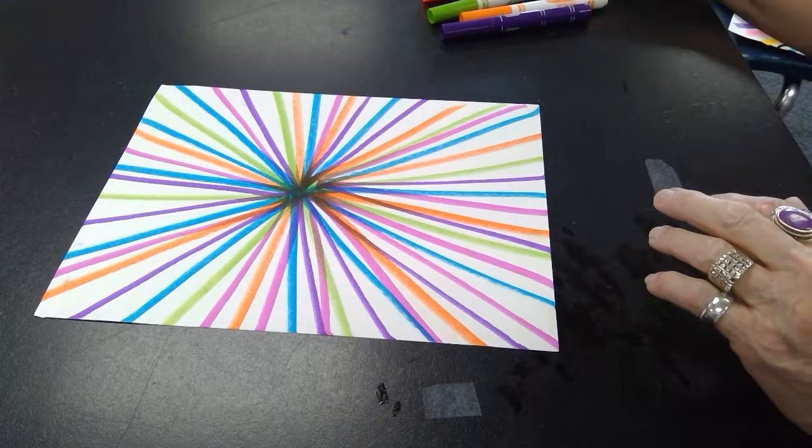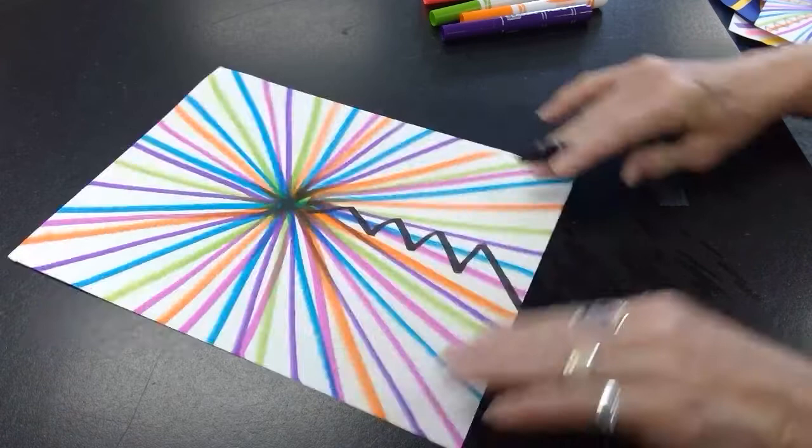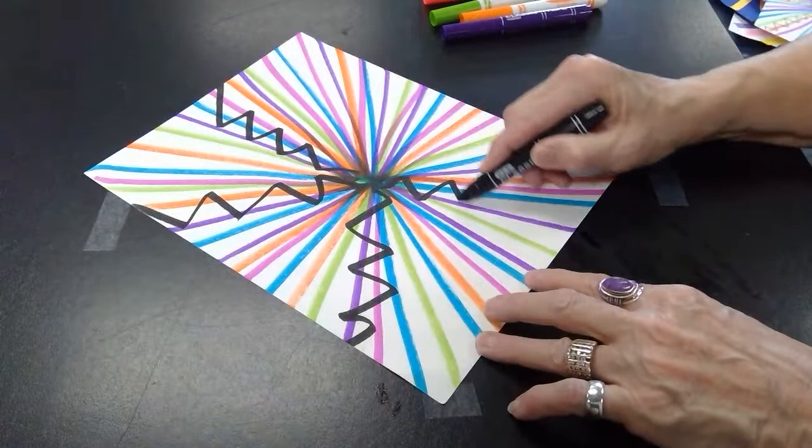Now I'm going to use my black. So I'm going to take my black, and from that center point I'm going to just make some zigzag lines to the outside edge from the center, just to create a little more interesting lines that are different from the straight ones.